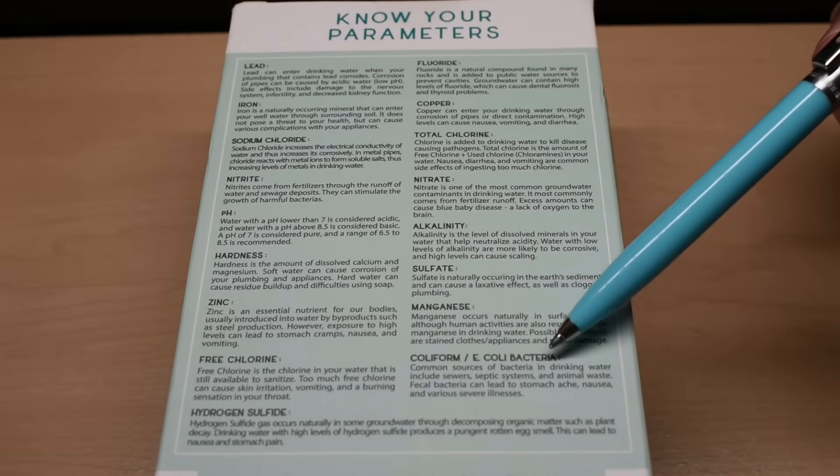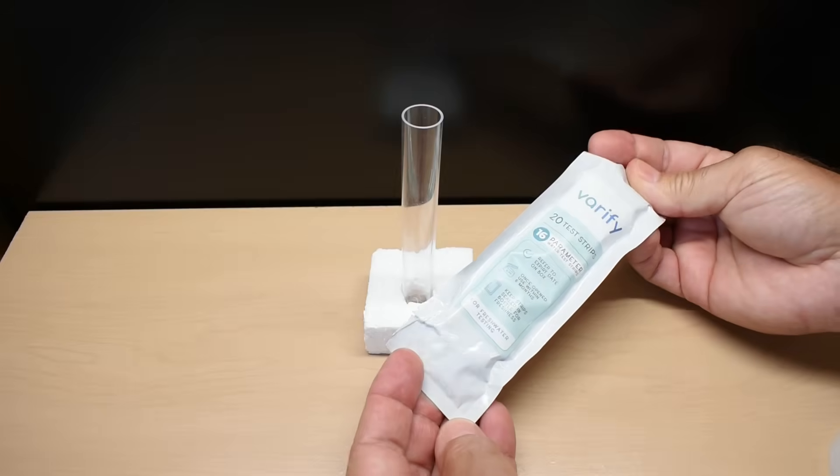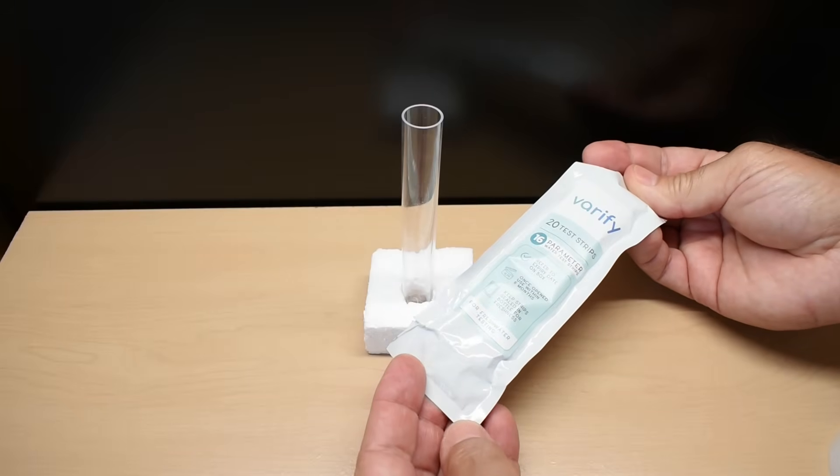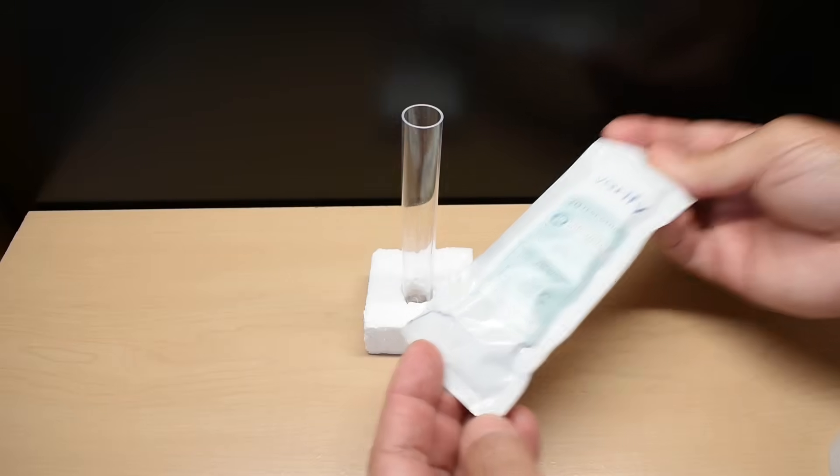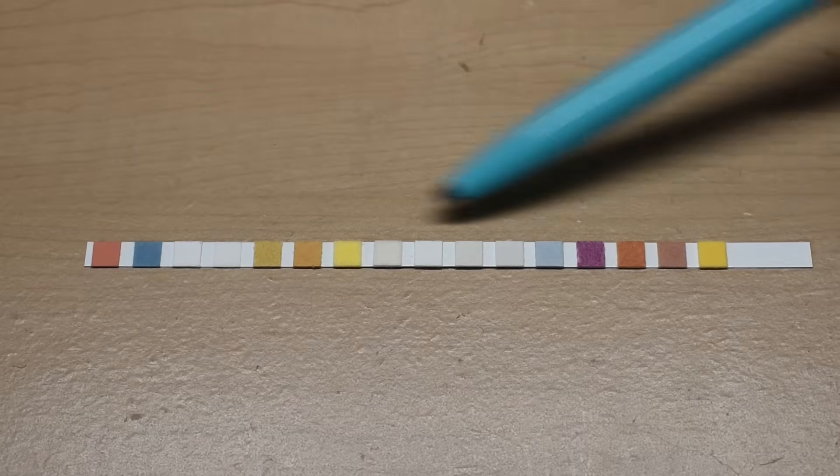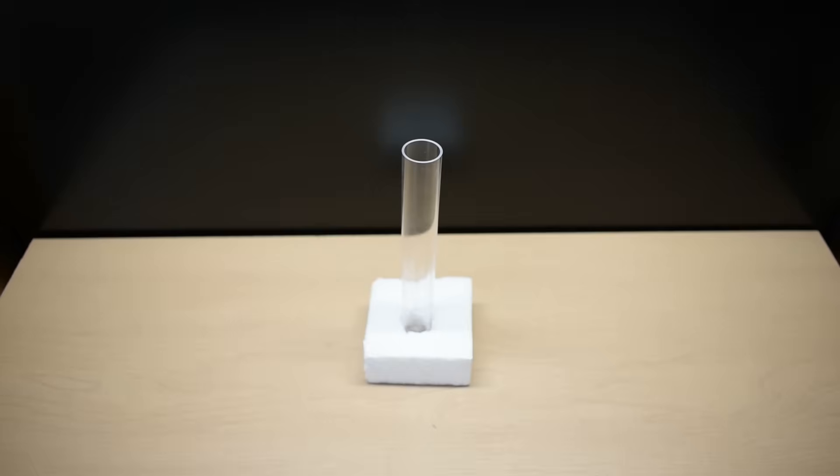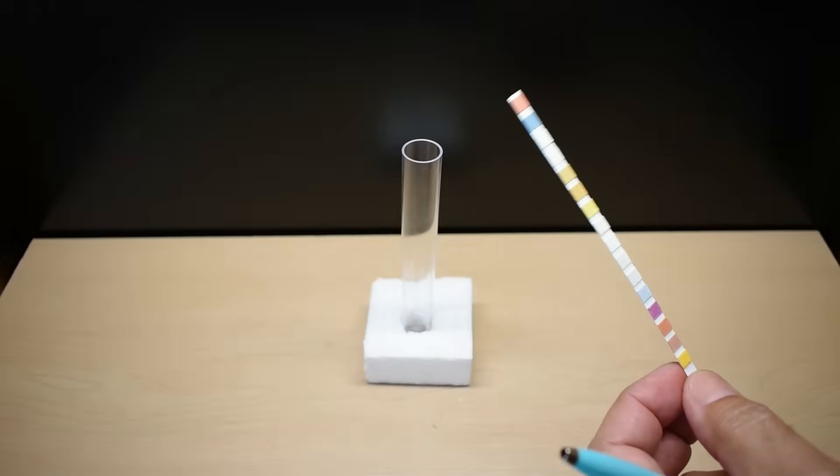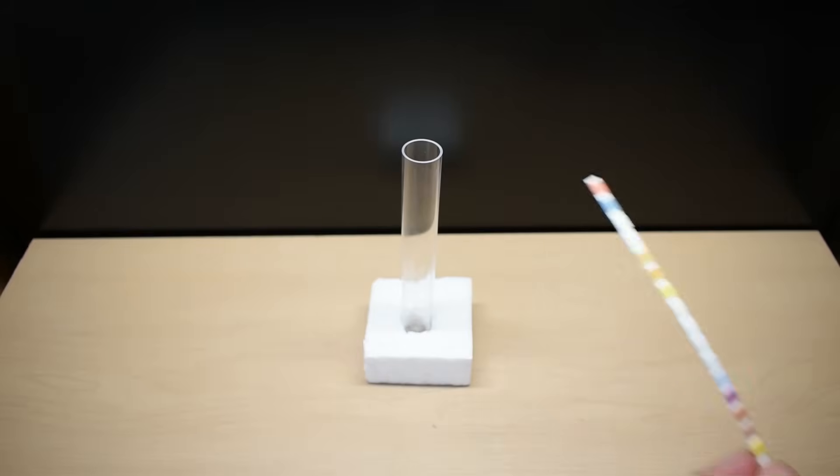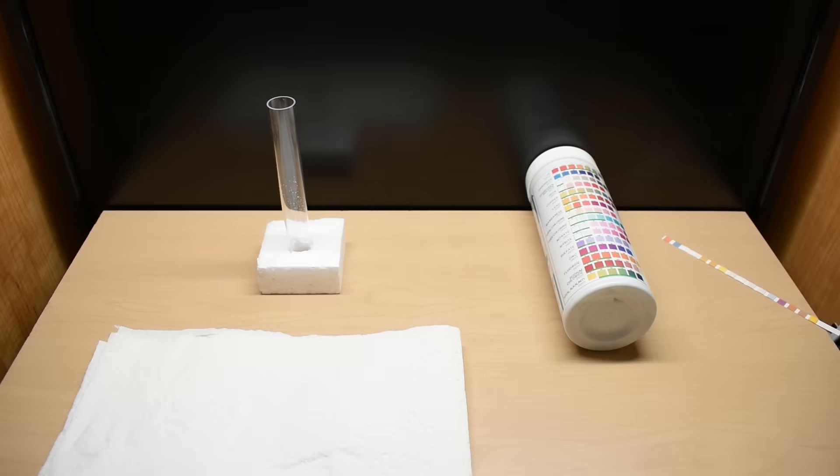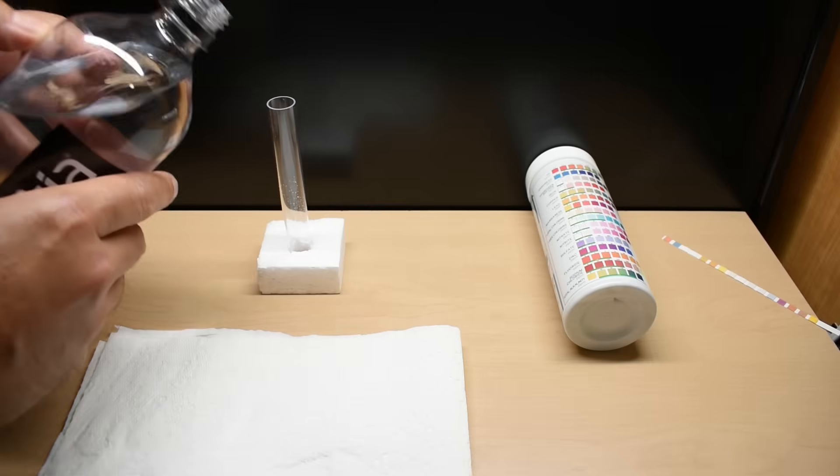We will not be testing the water samples for bacteria. You can see the test strips are sealed inside this pouch. Let me open it up. Here's a close-up look at the test strip. Just like the previous test, the test tube is going to be rinsed with distilled water before pouring in the next sample.